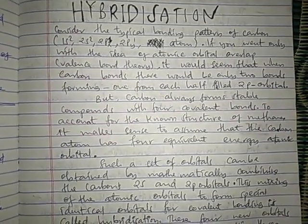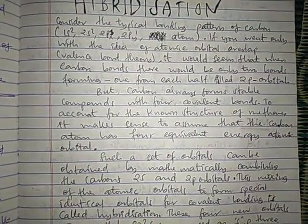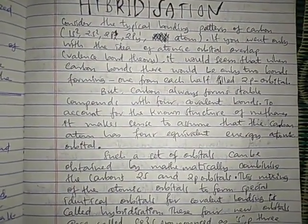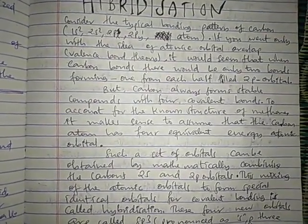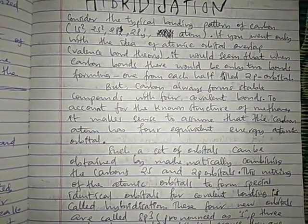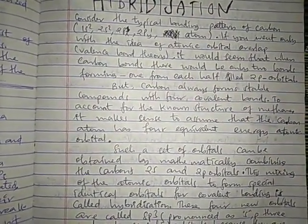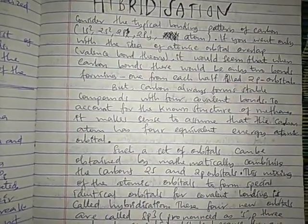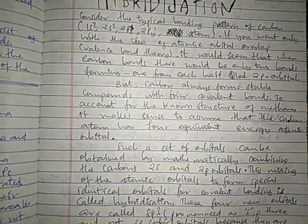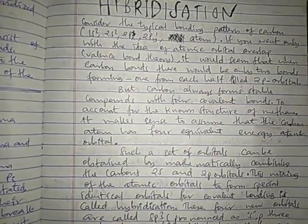Consider the typical bonding pattern of carbon. Carbon has the electronic configuration of 1s2, 2s2, 2px1, and 2py1. According to this electronic configuration, carbon has two unpaired electrons, which are in the px and py orbitals. According to valence bond theory, it would seem that carbon can only form two bonds, because it has only two half-filled p orbitals. But carbon always forms four bonds, as we know from O-level organic chemistry.